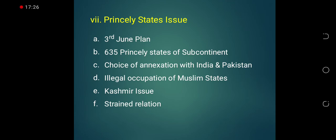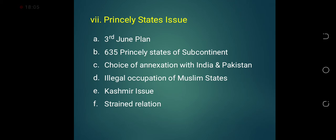For example, the states of Junagadh, Manavadar and Mangrol — three states located on the Kathiawar coastal belt. Moving from Karachi towards Mumbai, this whole coastal belt is called Kathiawar. The rulers of all three states were Muslims and they were geographically closer to Pakistan as well, but the Indians illegally occupied them and forcefully took control of this area toward India.